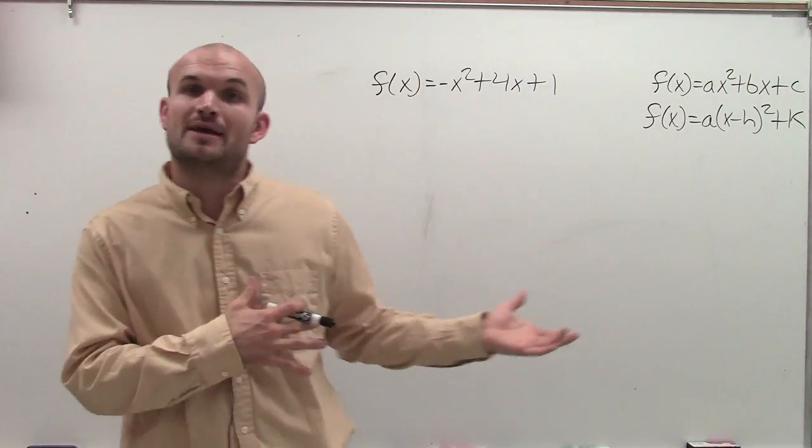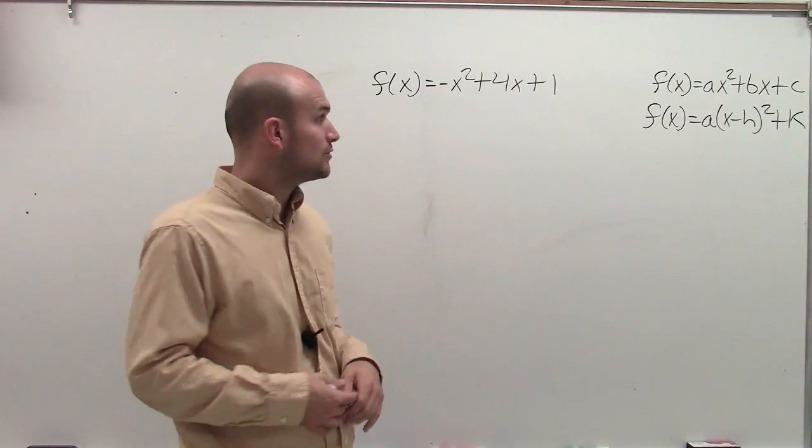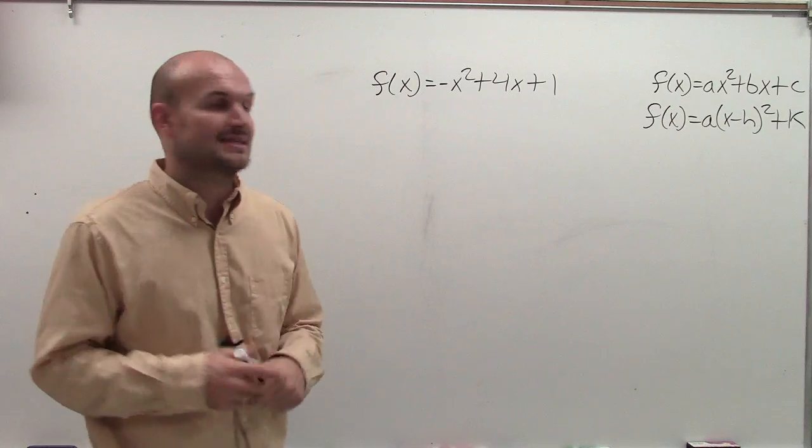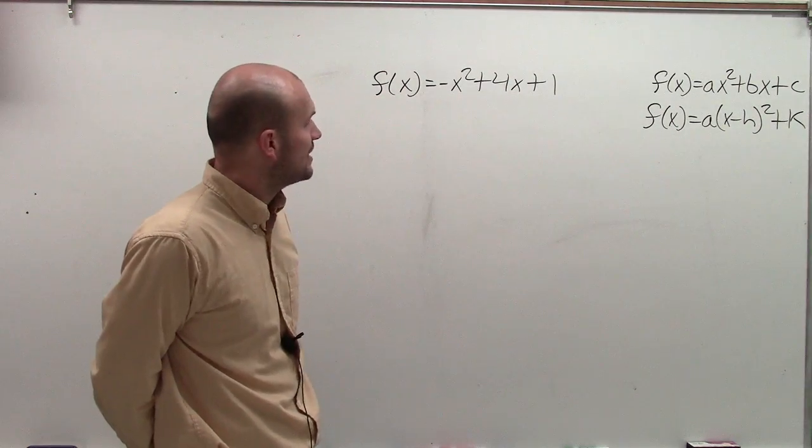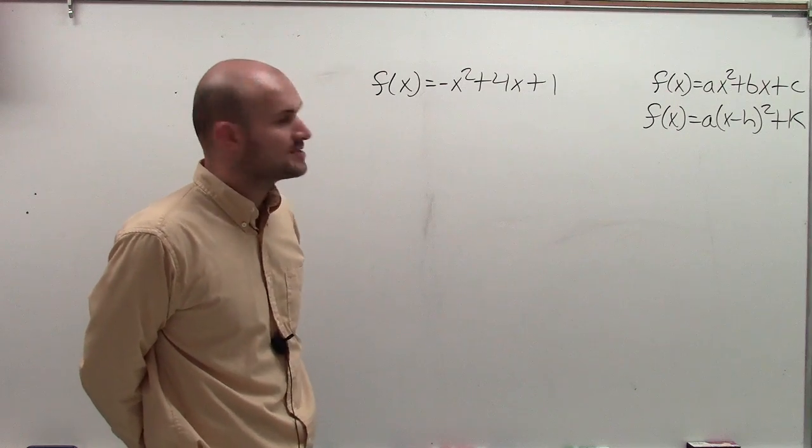So there's a couple big missteps that students make with this problem. I'm going to try to work through it very quickly and really highlight the steps that students get a mistake on. So the first thing, f of x equals negative x squared plus 4x plus 1.